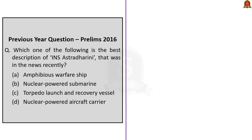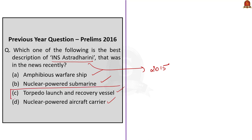A previous UPSC question from 2016 asks: which is the best description of INS Astradharani that was in the news recently? The options are amphibious warfare ship, nuclear-powered submarine, torpedo launch and recovery vessel, and nuclear-powered aircraft carrier. INS Astradharani is an indigenously built torpedo launch and recovery vessel, commissioned in October 2015. Therefore, the correct answer is option C.